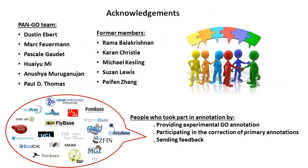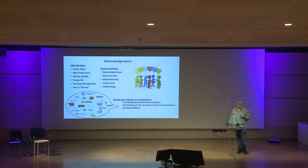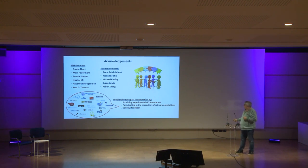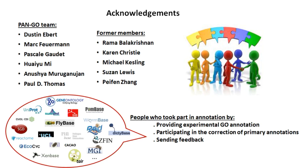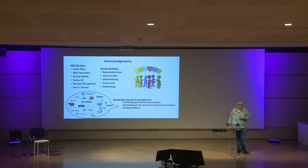This is a work done by the PanGO team, led by Paul Thomas. I also have to mention the former members, and I would especially acknowledge Susie Lewis, because she was the person who first developed this nice tool with the matrix associated to the phylogenetic trees. Of course, this wouldn't have been possible without the whole GO community — all the people who provided the GO annotations, which are really our material to feed our annotation. A big thank you also to the people who participated in the correction, because there was a big work of correcting annotations and many people sent in feedback. Last but not least, thank you for listening and for your attention.